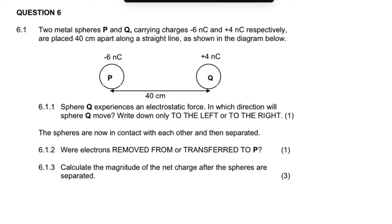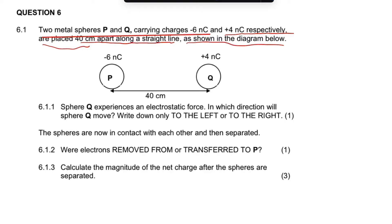This is an electrostatics problem for grade 11 and 12. Two metal spheres P and Q carry charges of negative six nanocoulombs and positive four nanocoulombs respectively, and are placed 40 centimeters apart along a straight line. Sphere P is negatively charged, meaning it has an excess of electrons, while sphere Q is positively charged, meaning it has a deficiency of electrons.